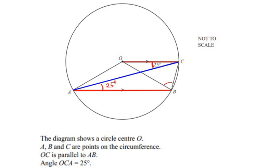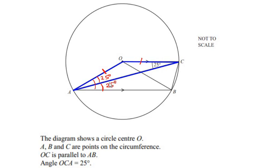Now let us concentrate on triangle OAC. Triangle OAC is an isosceles triangle because side OA equals side OC, which are two radii of the same circle. So we have angle OCA as 25 degrees, and because of the isosceles triangle, angle OAC is also 25 degrees. The total angle A is therefore 25 plus 25, which equals 50 degrees.